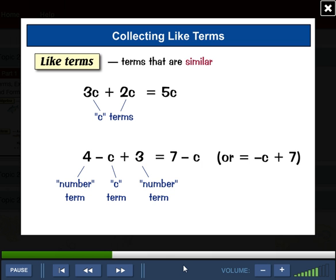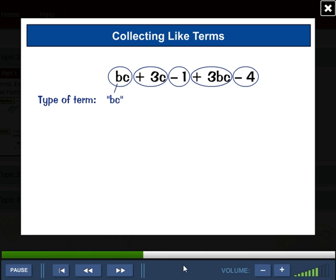OK, one more example. A bit trickier, this one. The first thing to do is circle all the terms so we know what we're dealing with. And you need to include the plus or minus sign in front of each term. So what type of terms have we got? Well, the first one is a bc term.